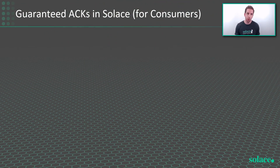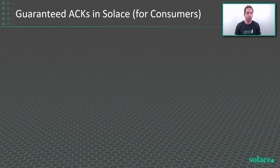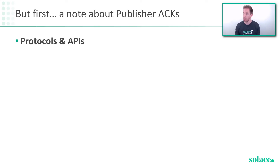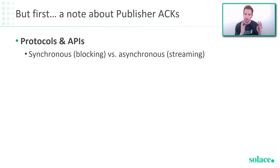In my last video we were talking about guaranteed ACKs in Solace from the publisher side of the equation. If you haven't seen that video I'll put a link somewhere up here. In just one second I want to cover something I kind of glossed over in the last video — protocols and APIs and synchronous or blocking behavior versus asynchronous or streaming behavior.